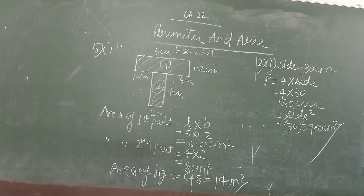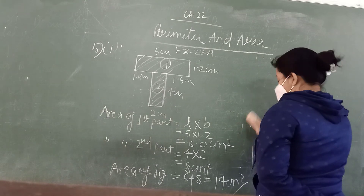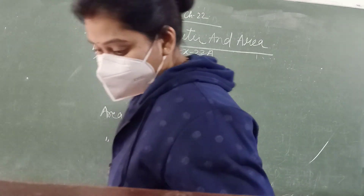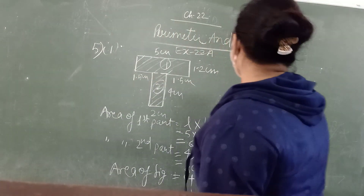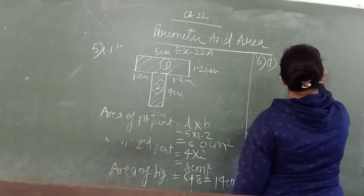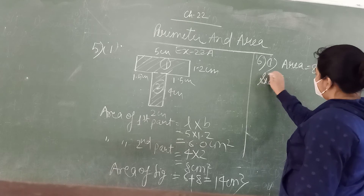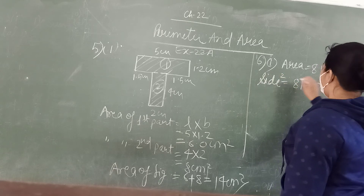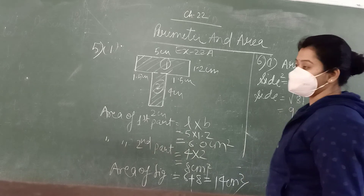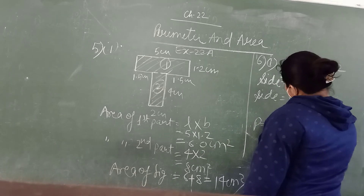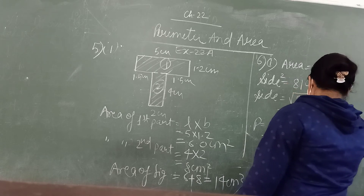In the sixth question, the areas are given — find the perimeter of the square. In the first part, area is 81 centimetres squared. We know that area of a square is side squared. So side squared equals 81 centimetres squared. Taking the square root of 81, the side is 9 centimetres. So the perimeter is 4 into side equals 4 into 9 equals 36 centimetres.